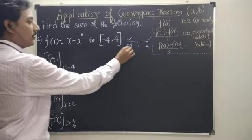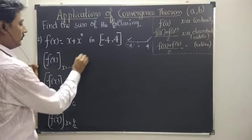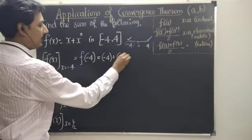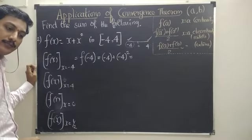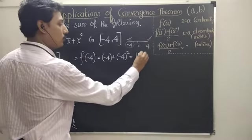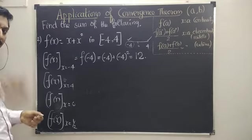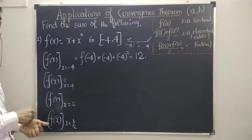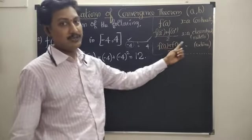x equal to minus 4 is the left end — it is a point of continuity. So it is nothing but f of minus 4. Substituting x equal to minus 4: minus 4 plus minus 4 squared equals minus 4 plus 16, which is 12. What about f of x at x equal to plus 4? You may think it gives the same answer, but x equal to 4 is a point of continuity, so it gives a different answer.